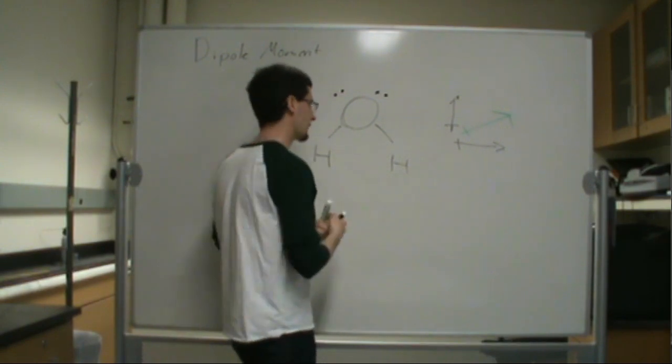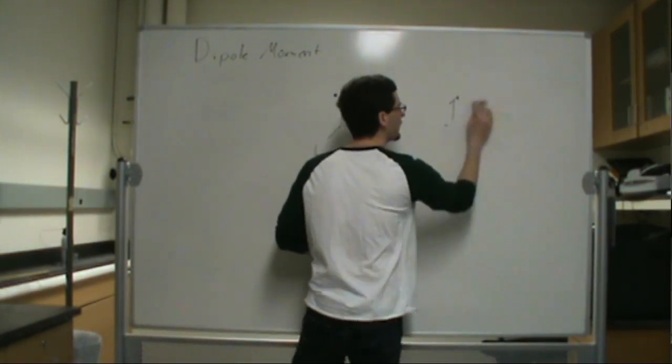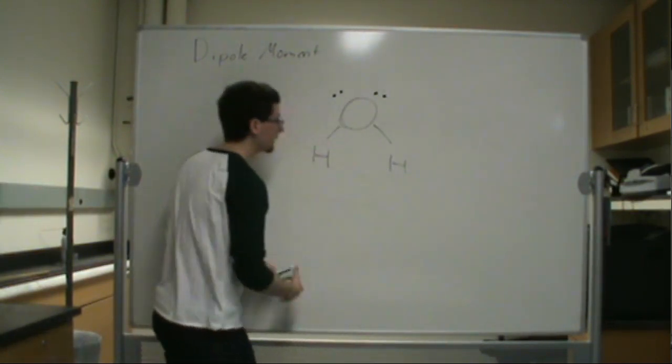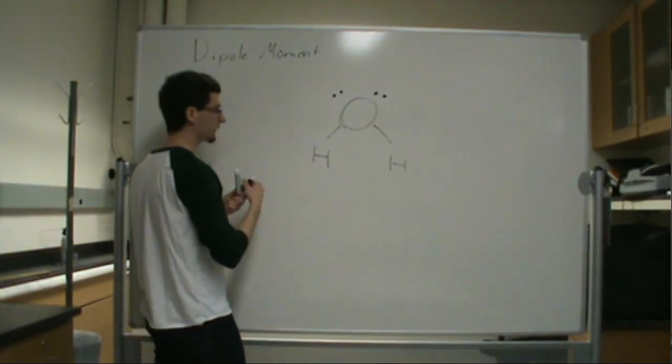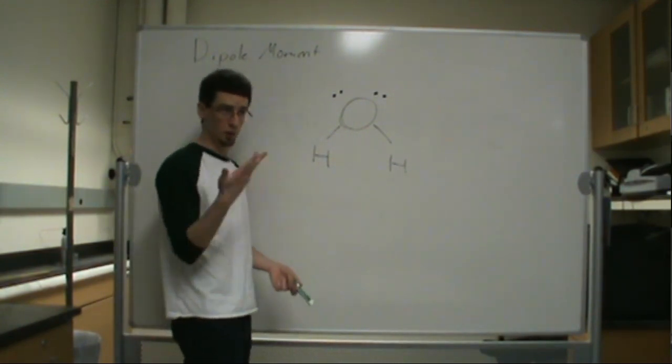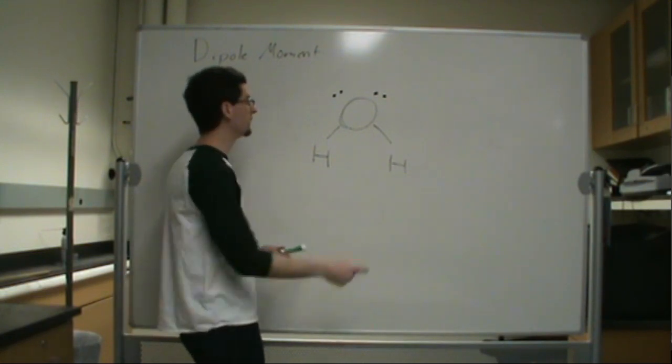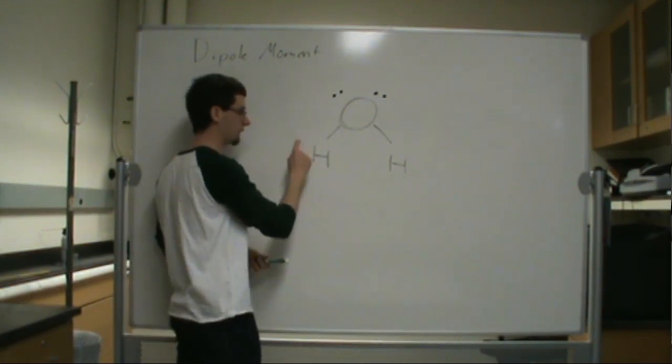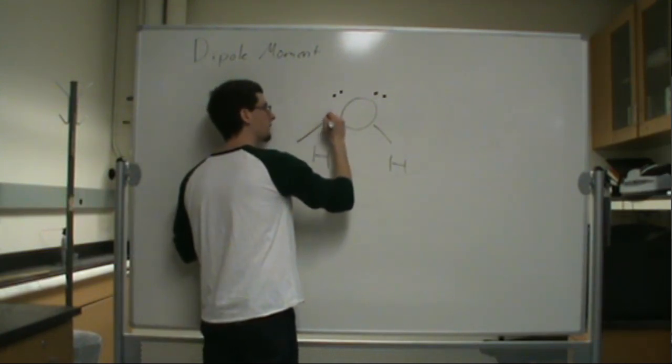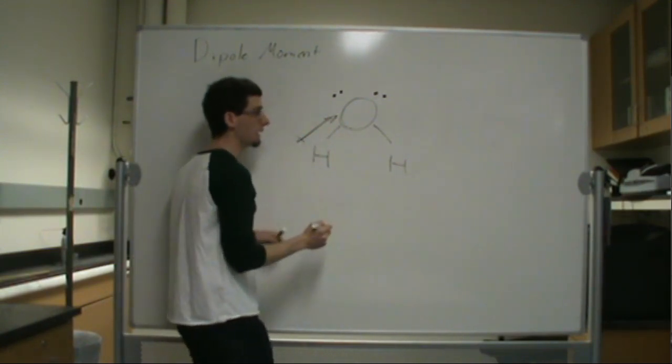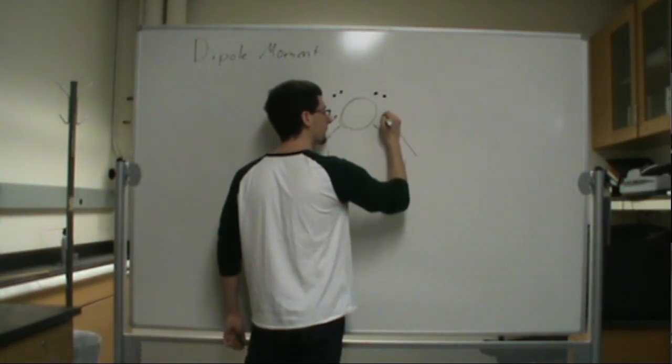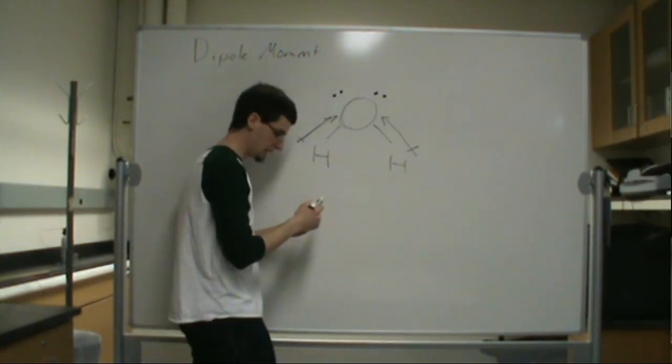So, let's draw our bond dipole moments for our bonds. The first bond we have is an H and an oxygen. So, noticing our trends in electronegativity, we know that oxygen is more electronegative than hydrogen. So, we could have a dipole moment pointing that way. And we could also have one for this bond, like that.